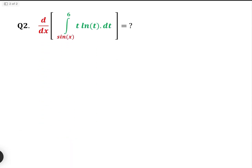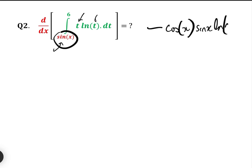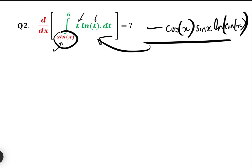Here is Question 2. Using the same three rules by inspection: first, the function of x is on the bottom so we put a minus; second, the derivative of sin(x) is cos(x); and third, we replace t by sin(x) in the integrand, giving sin(x)·log(sin(x)). So the answer is minus cos(x)·sin(x)·log(sin(x)), done by inspection very quickly.